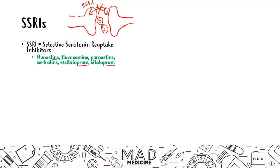If it ends in -tine, -amine like fluvoxamine, -line like sertraline, or -pram — that's the way to remember SSRI drugs. If you see them enough, you'll commit them to memory naturally, but I highly recommend writing these out so you can remember them.